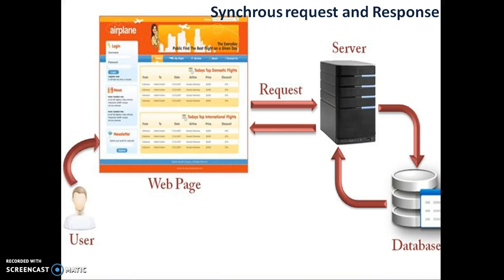In the synchronous model, the client — which means the browser — will send the request to the server. The server will accept the request, process the request, generate the response, and forward the response back to the browser. Synchronous means sequential, so the client sends the request to the server, and the server receives and processes it.